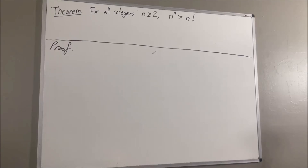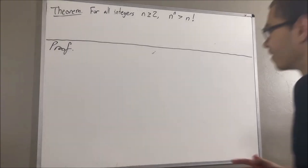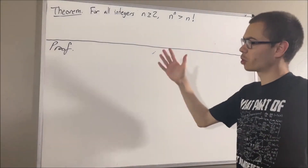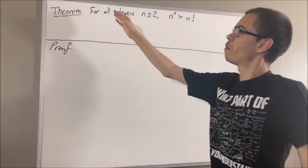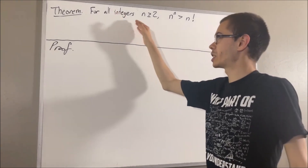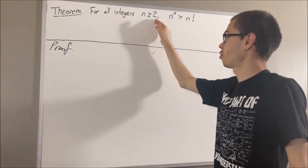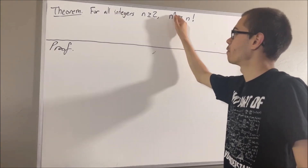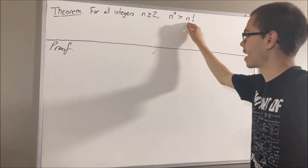Hello! In this video, we are going to prove the following theorem: for all integers n greater than or equal to 2, n to the power of n is greater than n factorial.